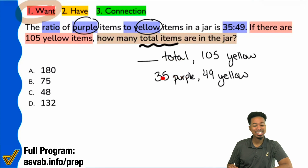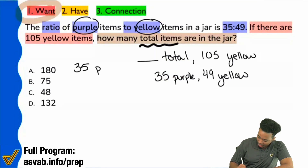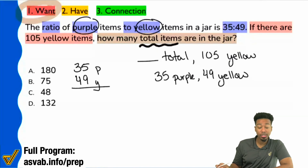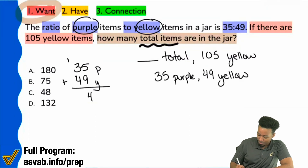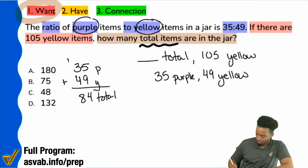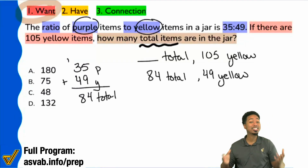I want to make sure that this says total, not purple. So I want to make sure that this says total. To do that, nice and easy — if I have 35 purple and then 49 yellow, how do I get the total? Just add them together. Add them together and you get your total. 5 plus 9 is 14, then 3 plus 4 is 7, plus 1 is 8 — so I have 84 total. I'll get rid of the old setup because I want to make sure I'm comparing the same things in the same way. That's really the biggest key.